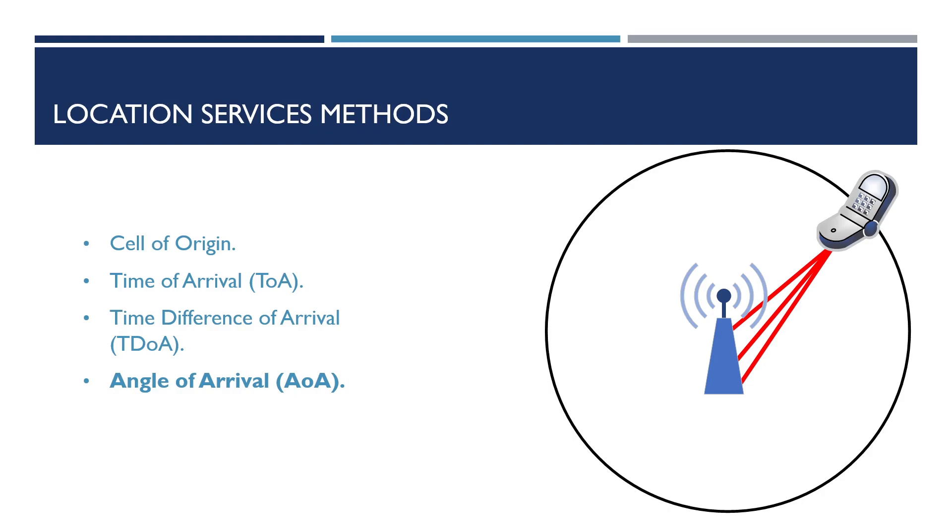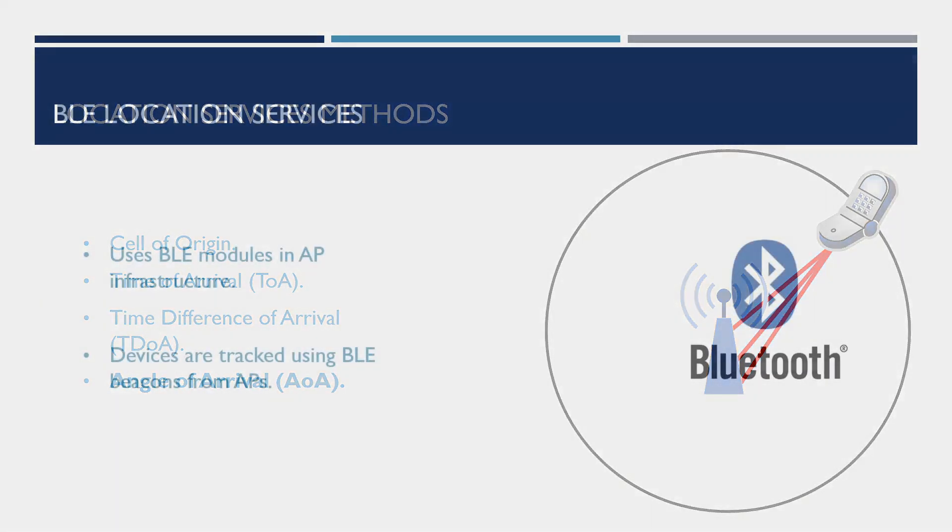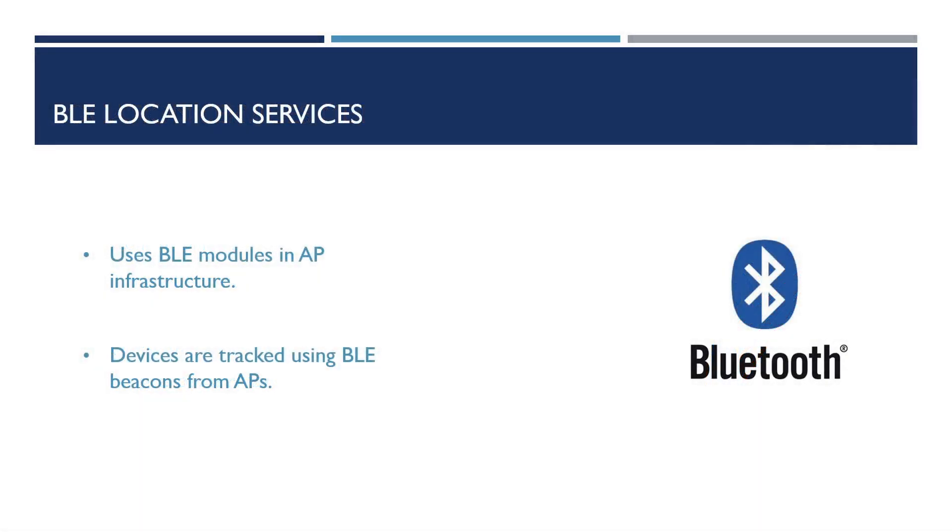The multiple APs will receive the signal from the tracked asset and then determine between them which direction it came from. We can use multiple techniques within our wireless design to make our location services more accurate.